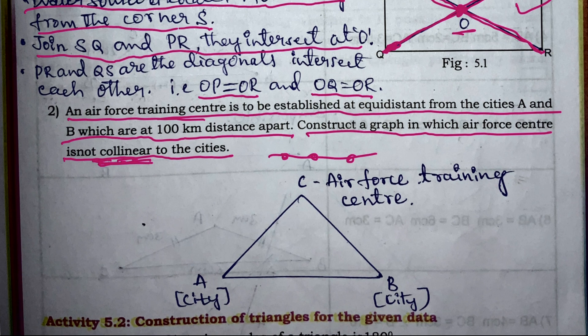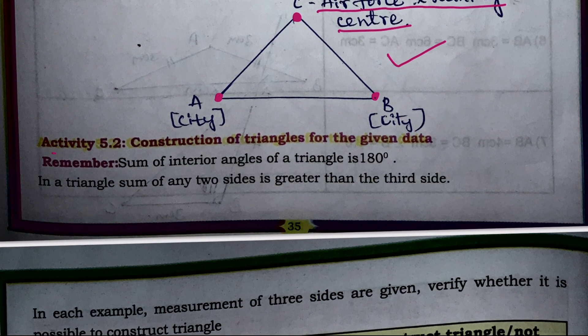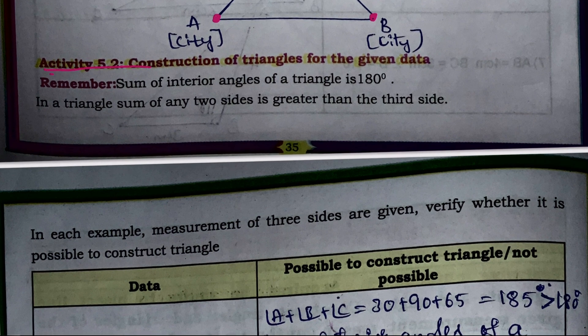I will take points A and B as the two cities. They are equidistant from another point — I will call this point C, which is the air force training center. Point C is equidistant from A and B. We can draw the graph accordingly. Next: Activity 5.2 — construction of triangles for the given data.